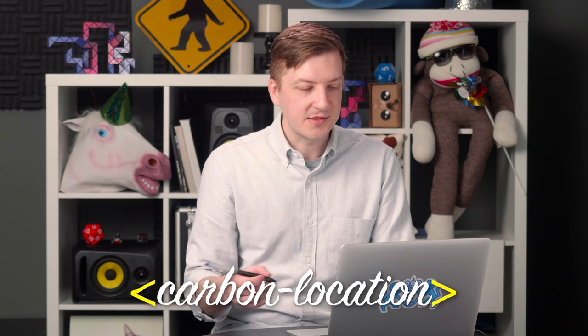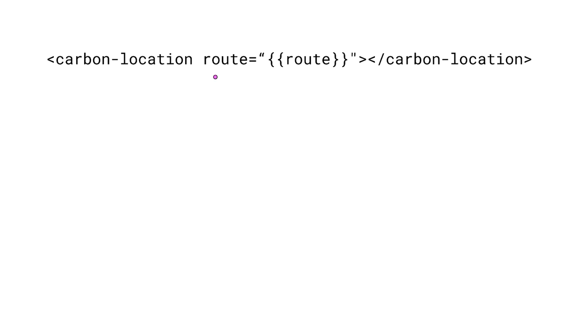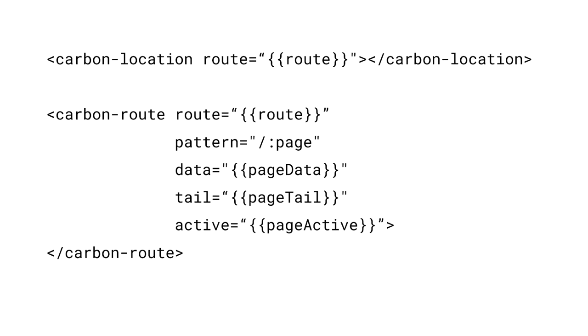When we're talking about carbon route, we need to think of it as sort of two separate pieces. The first is this element called carbon location. Carbon location's job is just to watch the URL bar and either reflect the state of the URL, or take any changes from our application and transfer those back to the URL. It does this using its route property, which we're going to expose in our application using a two-way binding, which we're also going to call route. We then couple the carbon location with one or more carbon route elements. The carbon route elements take the route from carbon location and bind to it using their own route property.